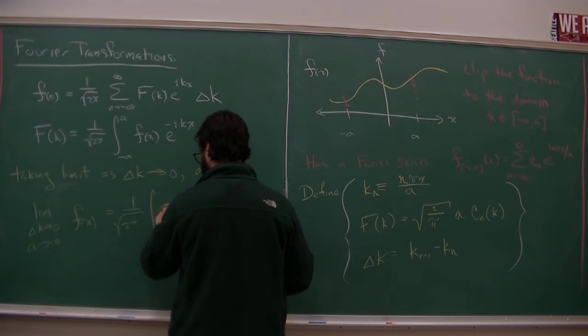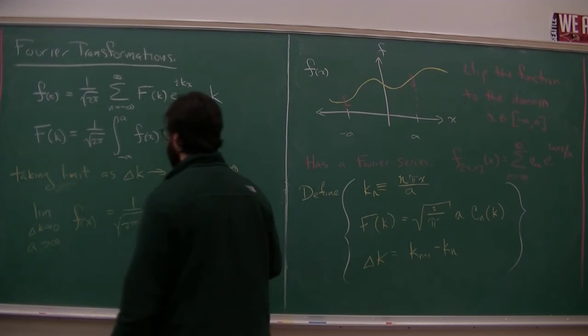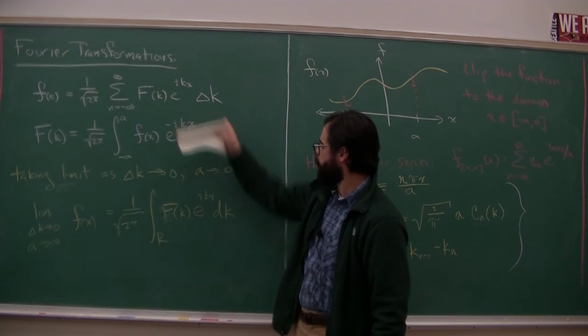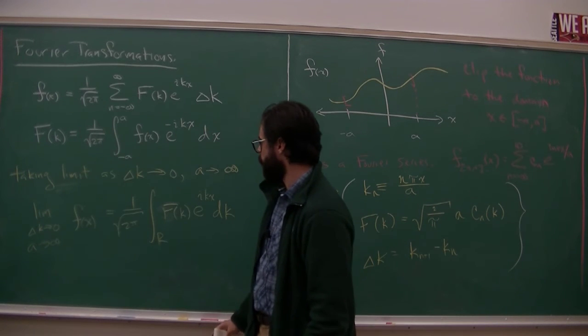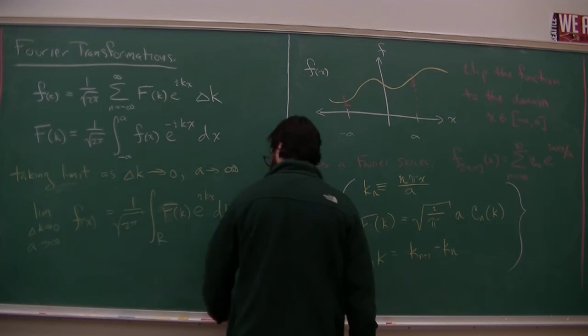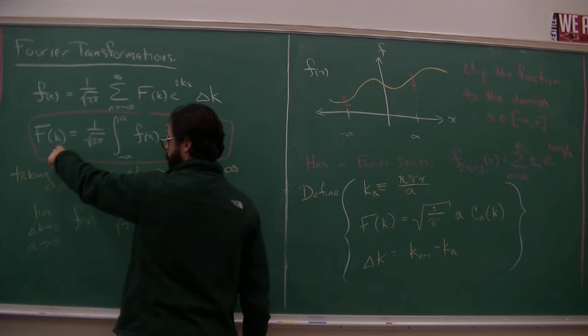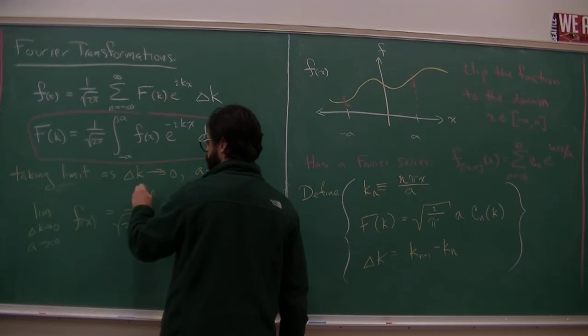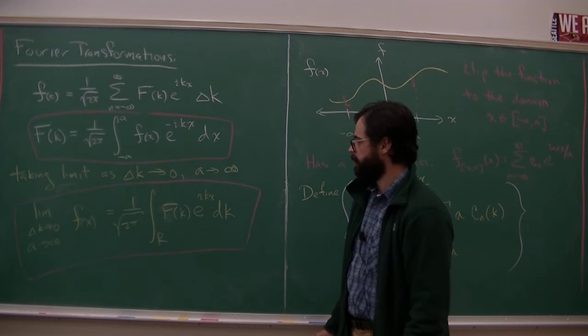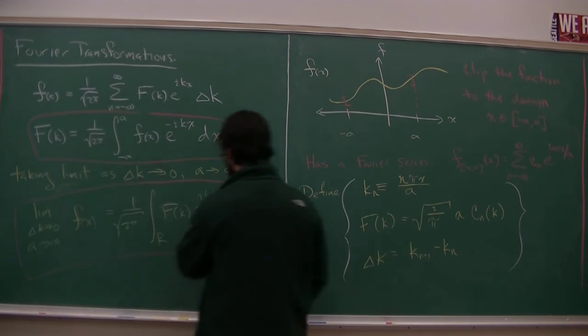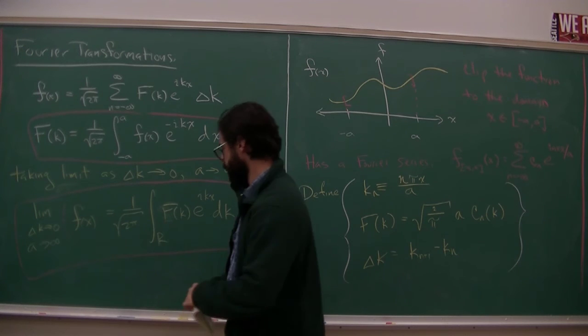So the delta k becomes a dk. And then this, because we have a limit sum essentially, this sum becomes an integral. So now I have two things. I have a way of getting the function to a set of coefficients. So the fk, or k, is a continuous variable. So k can take on any real number. And then I know how to get f of x back. So we get the Fourier transform. This is what's called the Fourier transform. And then we can untransform to get our original function back.